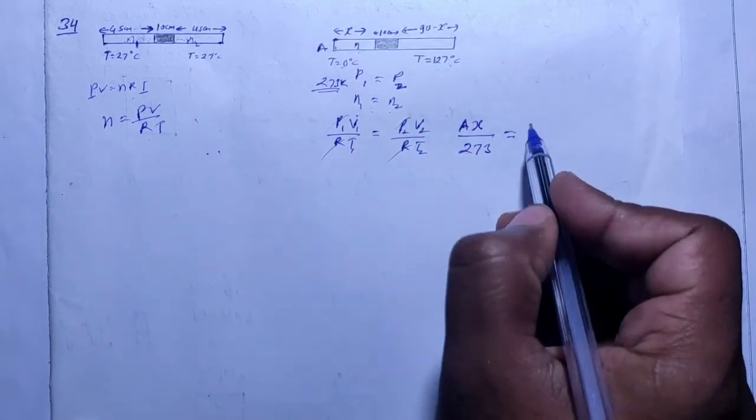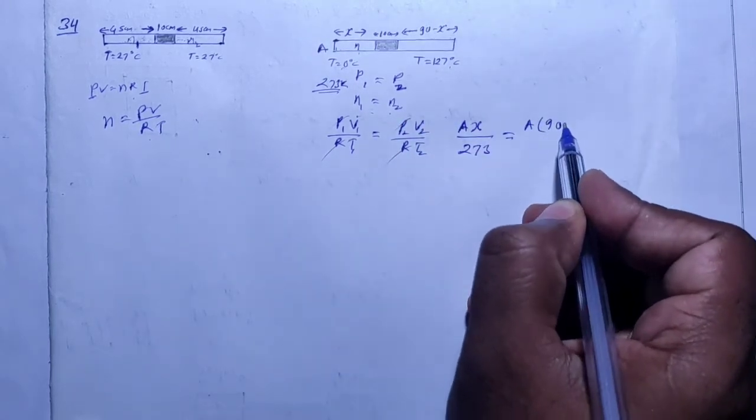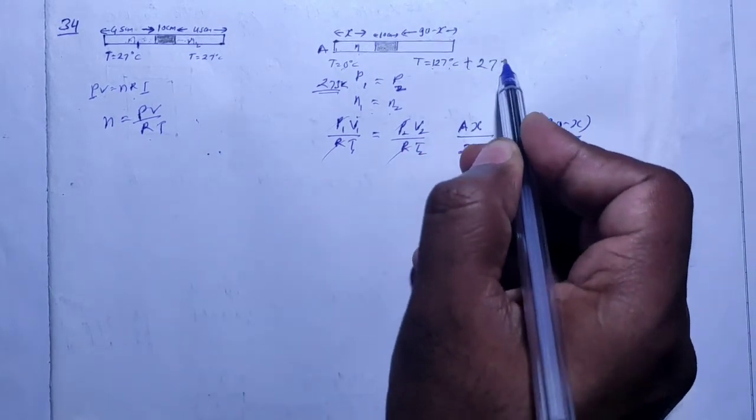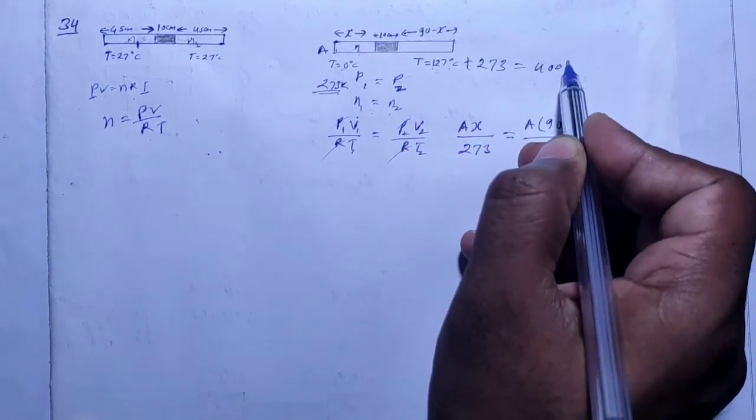Okay, what is the volume here? 90 minus X, A into 90 minus X, okay? And what is the temperature here? 127 Celsius, so we add 273, that is 400 Kelvin. So this is 400.